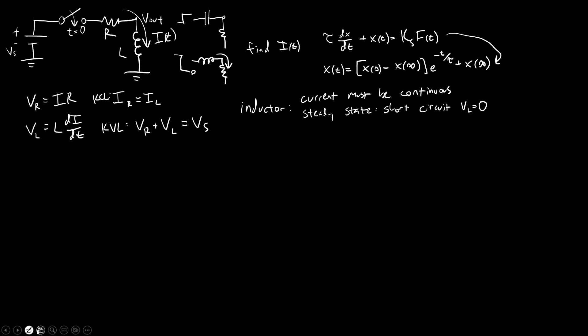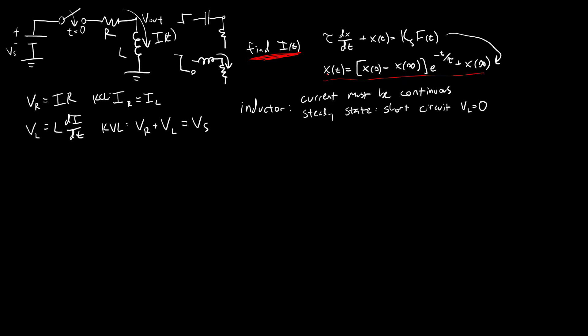So far, we have just written down everything we know. Our goal is to find the current in the circuit as a function of time. We're at the end of the day, we want this equation, but instead of X, we're going to have I for current in there.